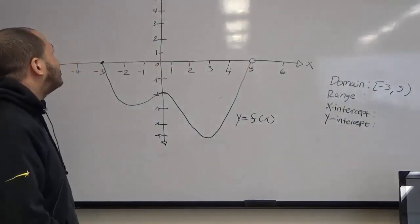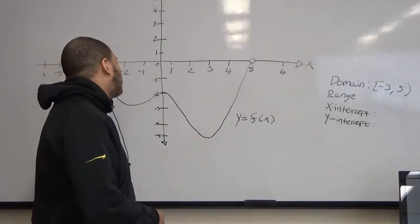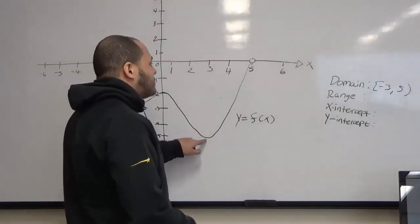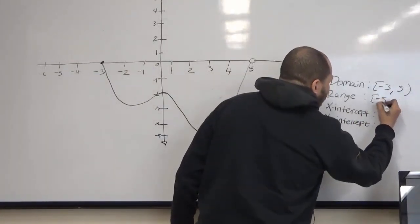Now, to find our range, we have to look at our y values. We always go from bottom number to top number. Here we have negative 5, and that is included, so we have a closed interval again, negative 5.